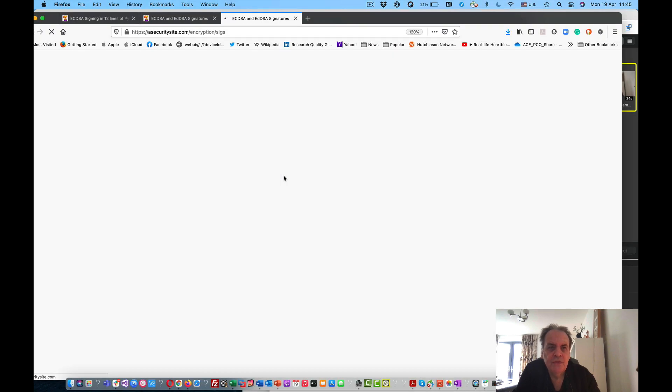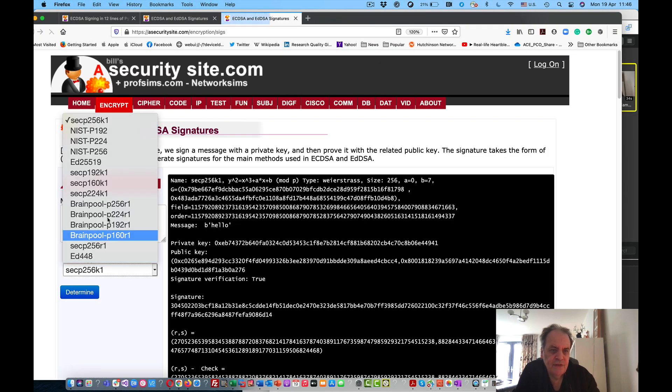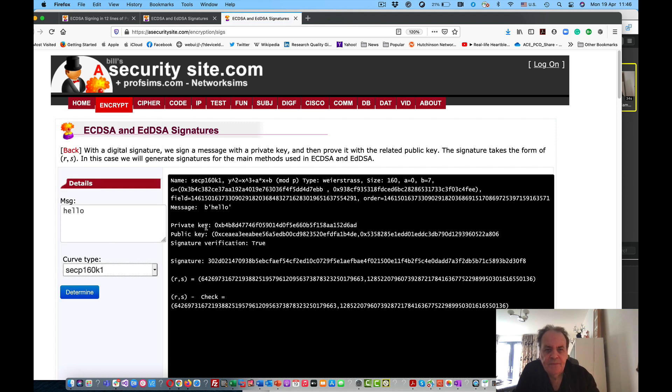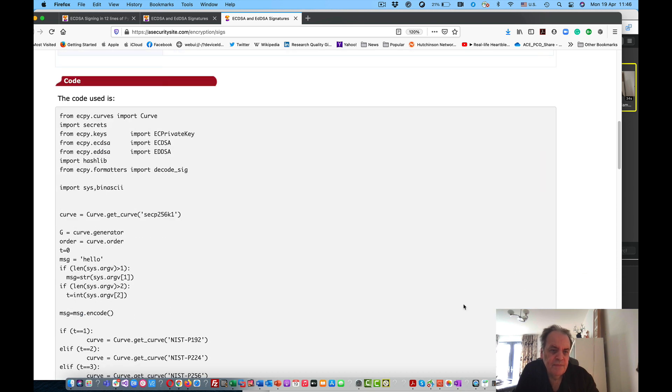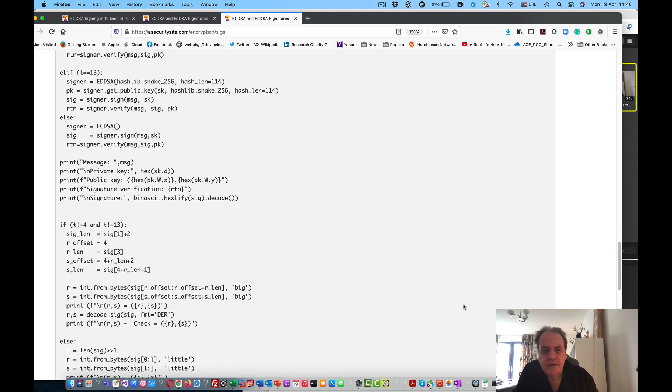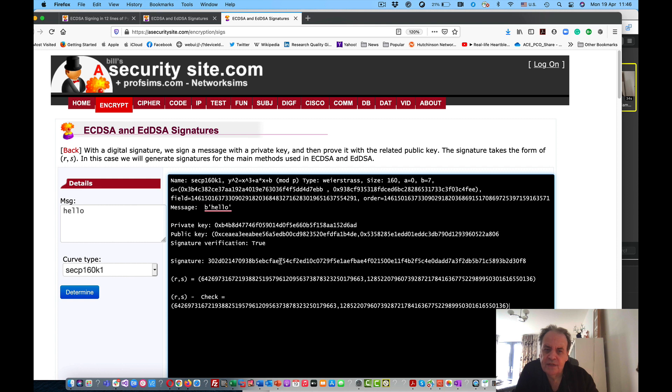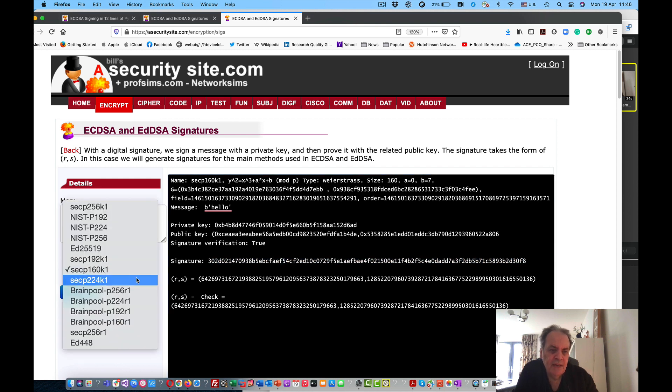These are some examples. We'll run a few more and select different types of curves. Here's the base point on this curve, the private key, the public key, and we validate that this is true. There's the signature and the R and S value. The code is here, which allows us to generate this signature. You can see there are many different ways we could perform this, including the Brainpool methods.